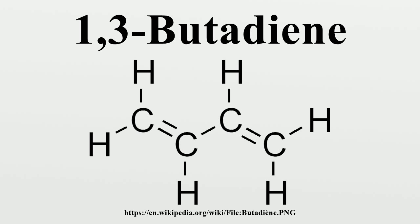The name butadiene can also refer to the isomer 1,2-butadiene, which is a cumulated diene with structure H2C=C=CH-CH3. However, this allene is difficult to prepare and has no industrial significance. This diene is also not expected to act as a diene in a Diels-Alder reaction due to its structure; to effect a Diels-Alder reaction, only a conjugated diene will suffice. The rest of this article concerns only 1,3-butadiene.